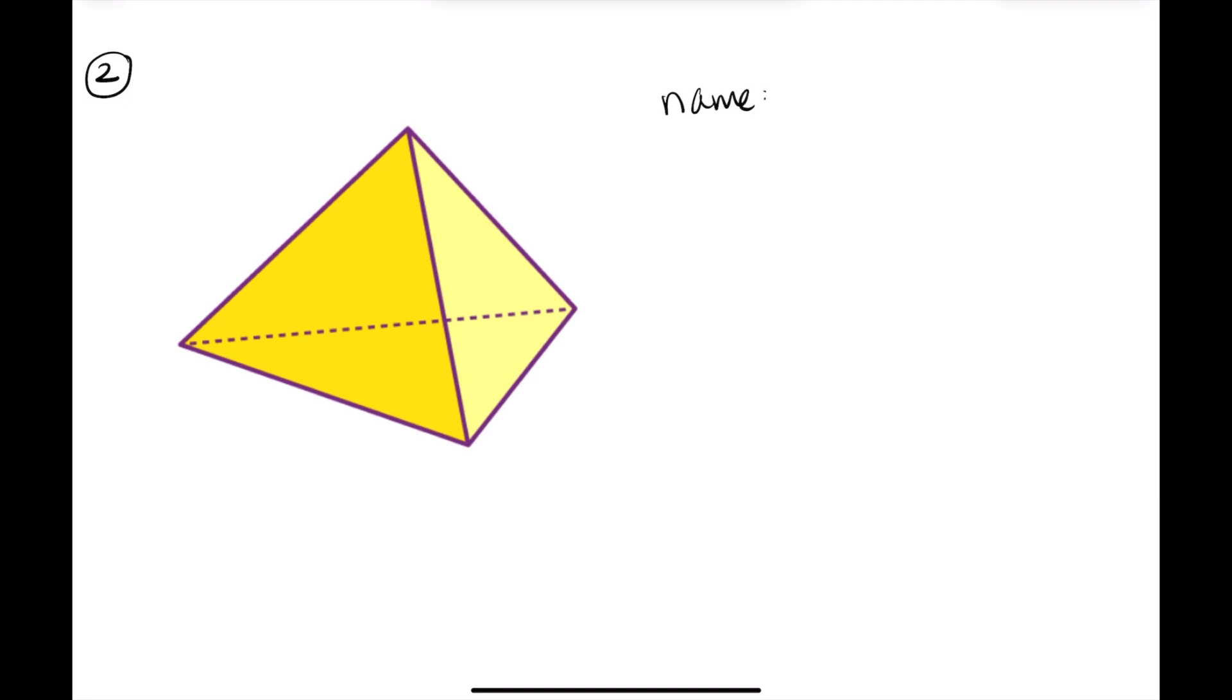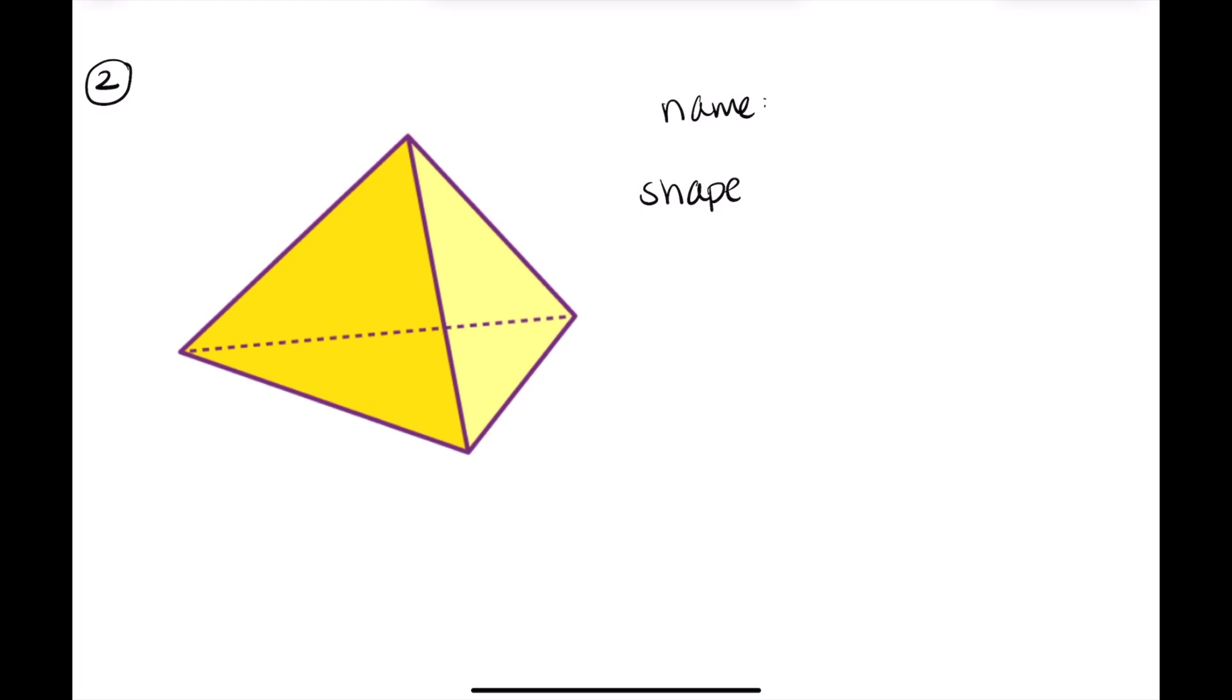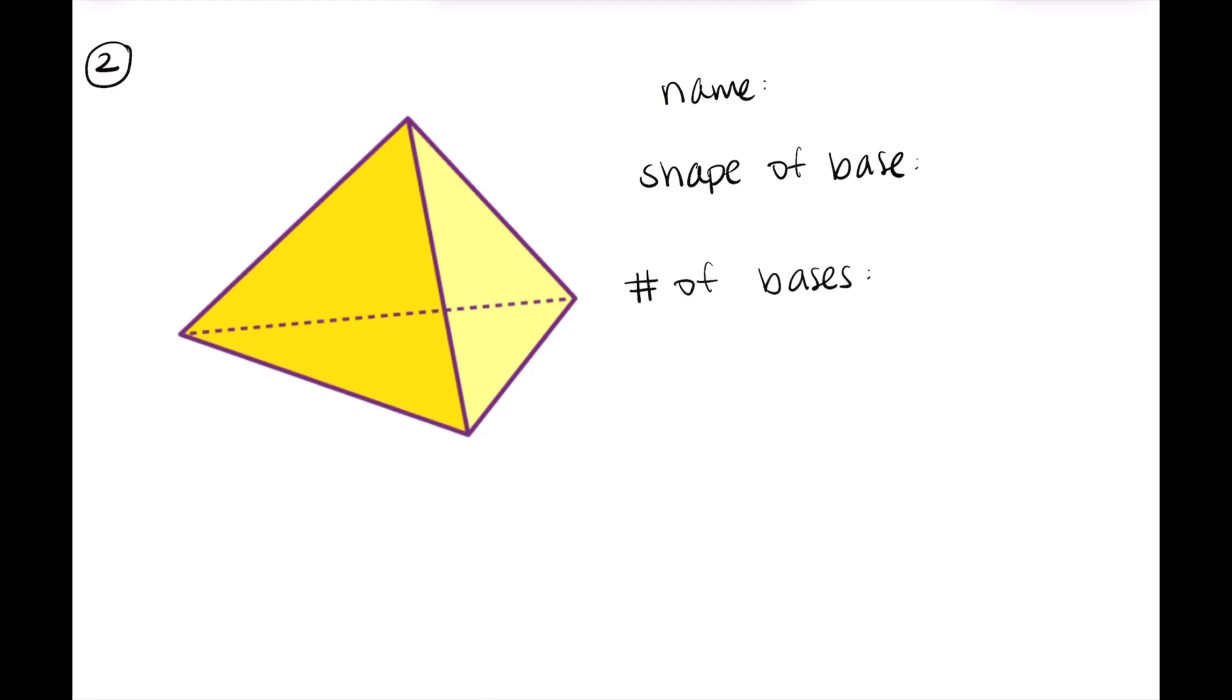Now we can move on to our next two practice problems. For number two, we have this 3D shape here in yellow. And again, we're classifying it by three things. We're classifying it by the name of the 3D shape, the shape of the base, and the number of bases. So if we look here, this shape would be classified as a triangular pyramid. Why? Two reasons. Because it only has one base, and because all of the sides join at the vertex. So those two things will make us have a pyramid versus a prism. And again, we went over that already, but that's something that a lot of people get confused with.